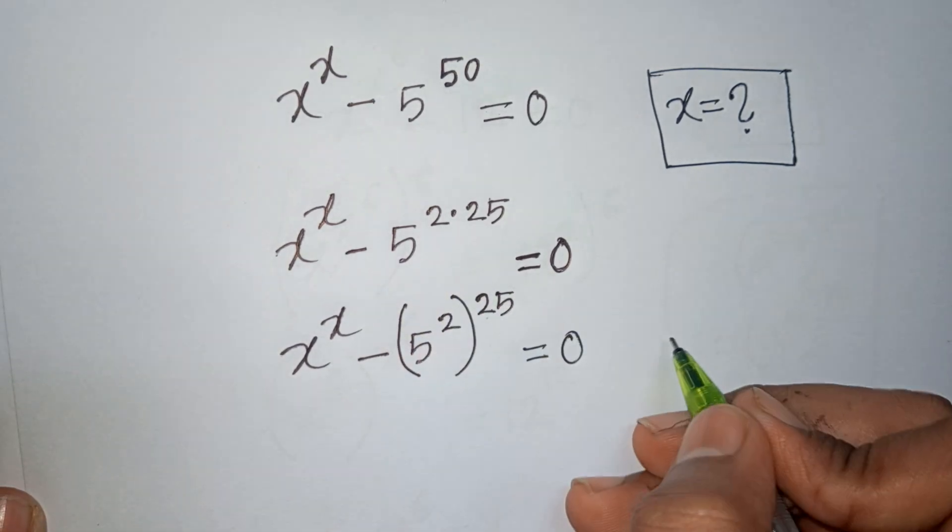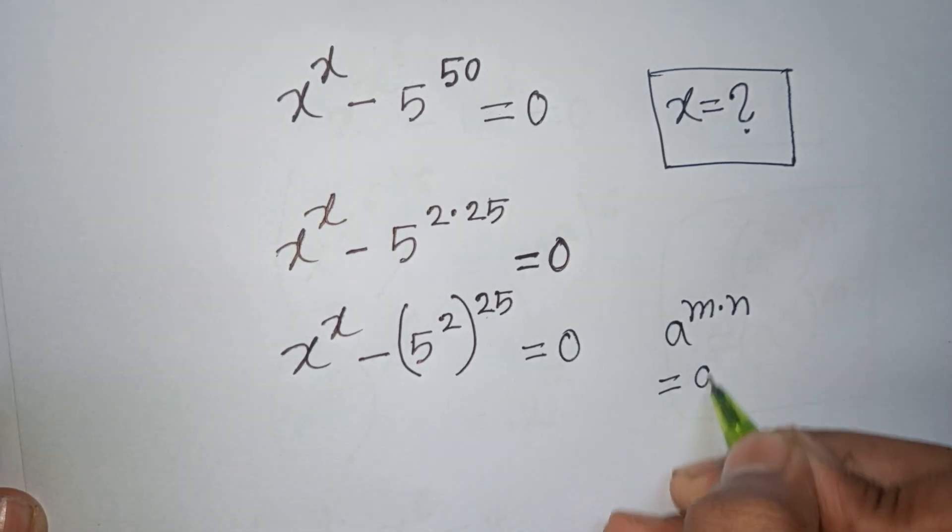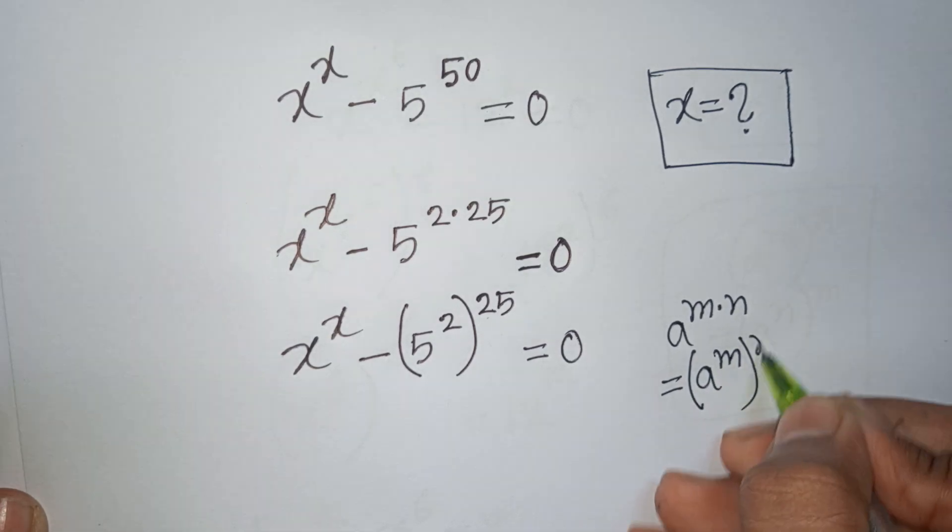Here we apply the exponential rule that a^(m×n) = (a^m)^n.